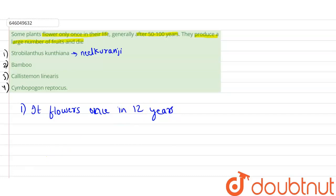It flowers every 12 years, but in the question we have asked about the plant that flowers generally after 50 to 100 years. So this is not the correct option here.